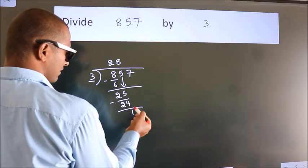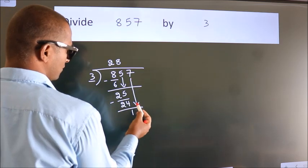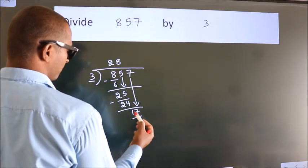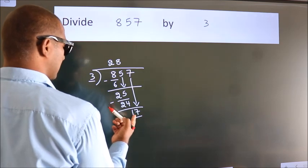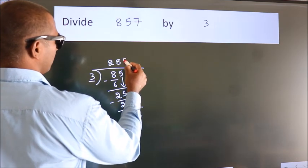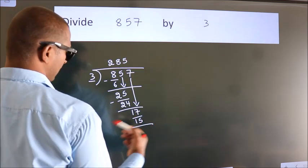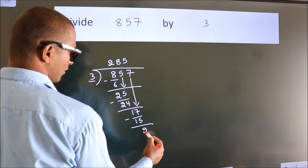After this, bring down the beside number. So 7 down. So 17. A number close to 17 in 3 table is 3 5s, 15. Now we subtract. We get 2.